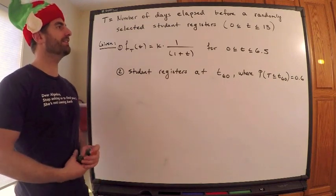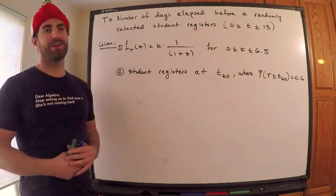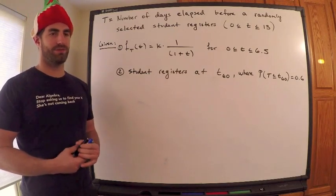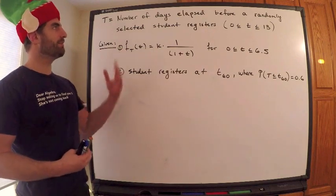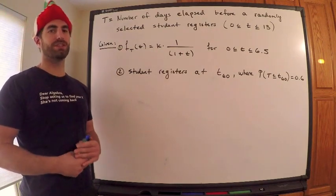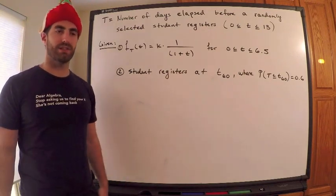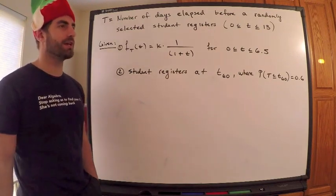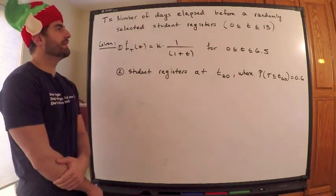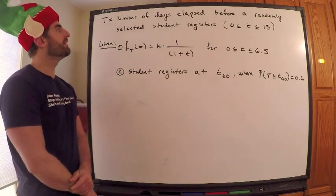This is, I have to write some stuff down given from the question, so this is what we have. t is a random variable, kind of strange because t represents a continuous random variable, but it's the number of days that it lasts before a randomly selected student registers for classes. So I guess we can have fractions of a day. Well, I mean, of course you can, and anything in between. So it's continuous, and 0 to 13 days, so 13 days to register.